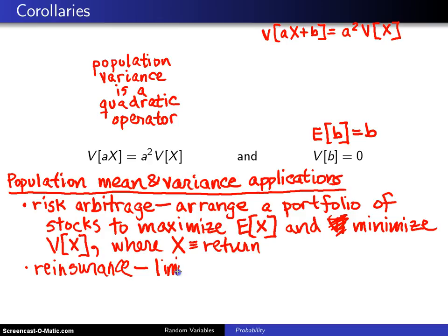you want to limit the variance of the risk exposure. So oftentimes what will happen is if a company insures an entire skyscraper in a large city, for example, that would be too much risk for that one company to take on. So in reinsurance,